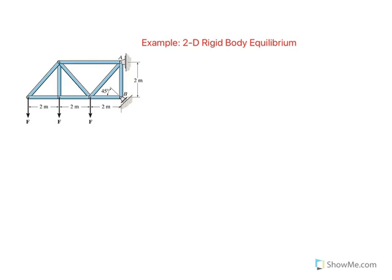As usual, we start with the free body diagram. A pin gives us a reaction in the x-direction and a reaction in the y-direction, and since we don't know the direction, we assume they are positive. The reaction at B — the roller — gives only one reaction, perpendicular to the surface. We call this F sub B, and it forms a 45-degree angle based on what is given.